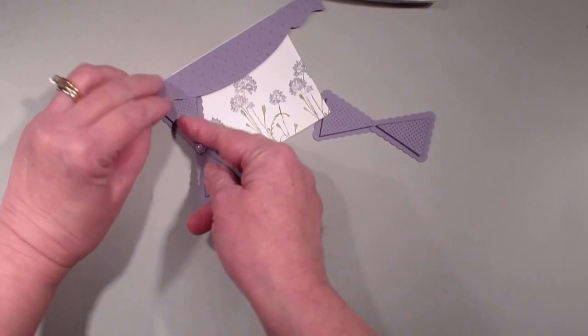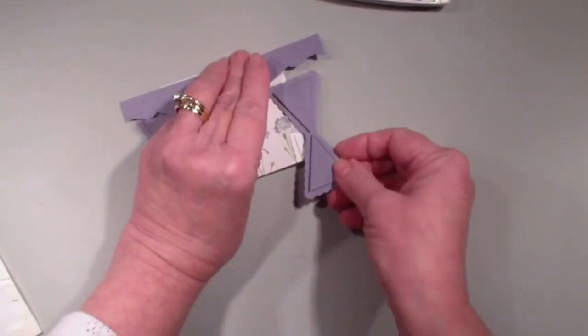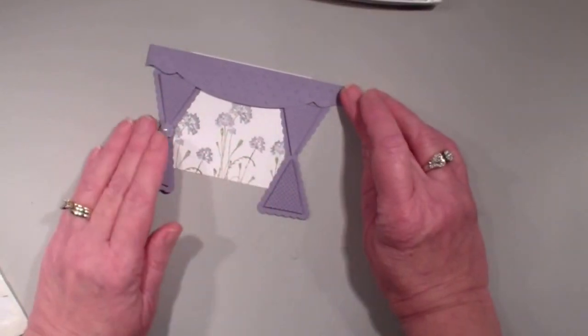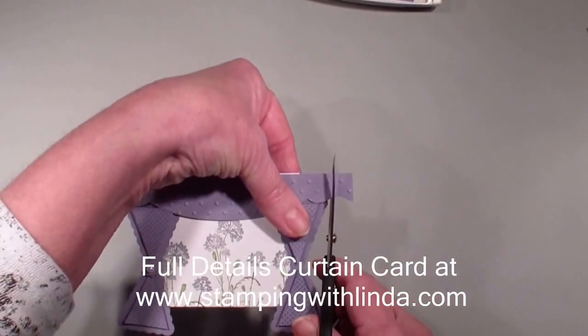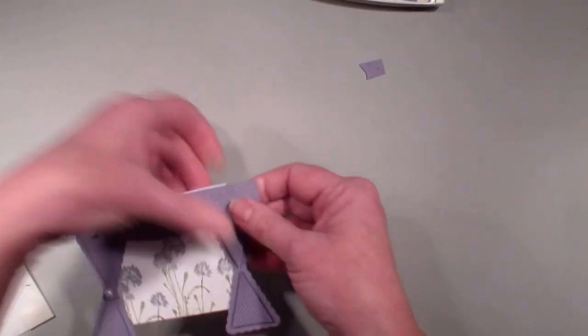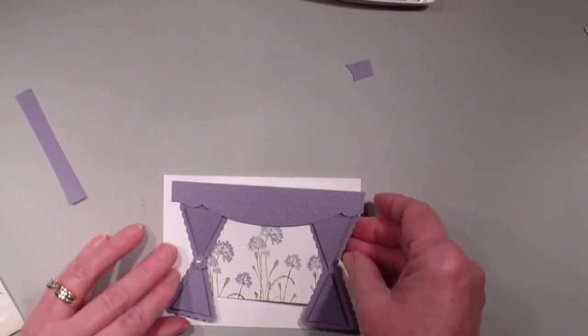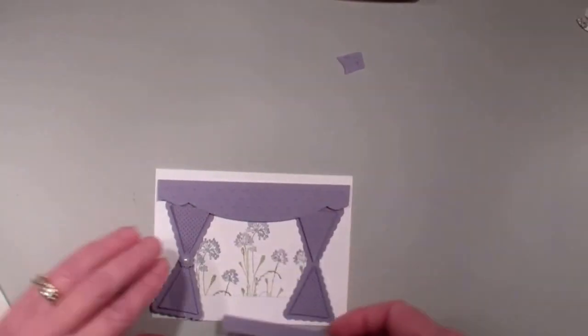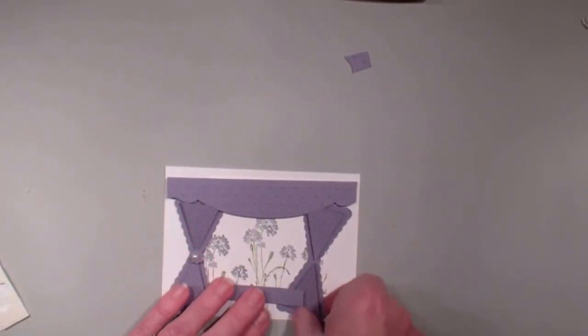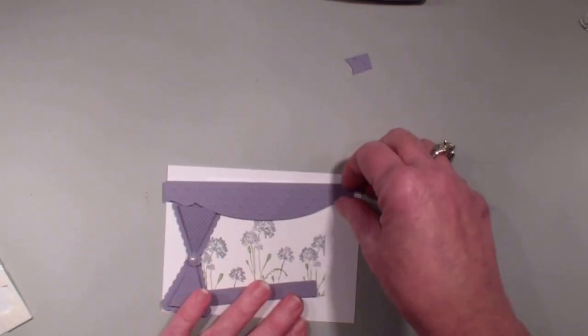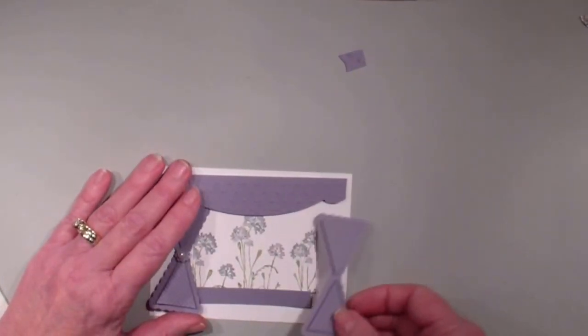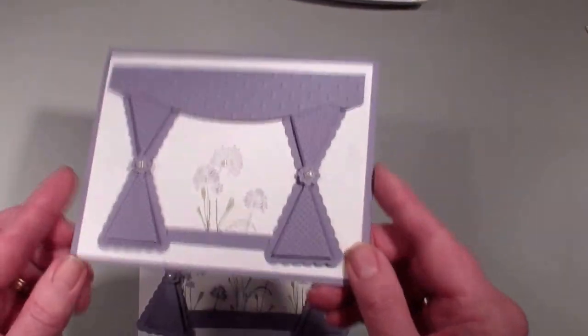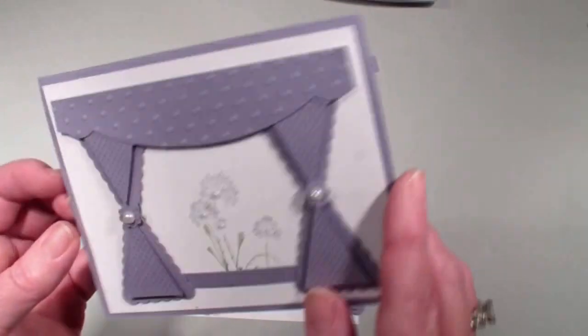And then I just want to adjust my valance, and I may need to trim off a little bit, and that's fine. I then mounted that onto a piece of whisper white. I have a small piece, quarter inch by three and a quarter, wisteria wonder, and that is actually for my windowsill. So these just tuck up underneath here.